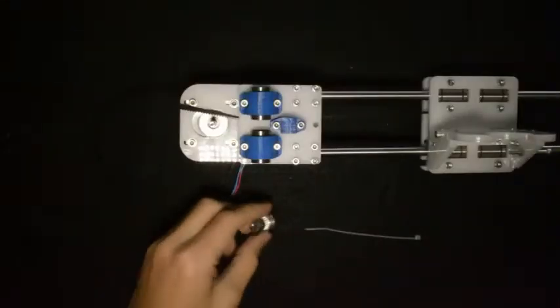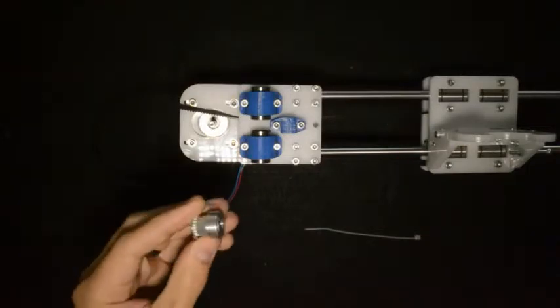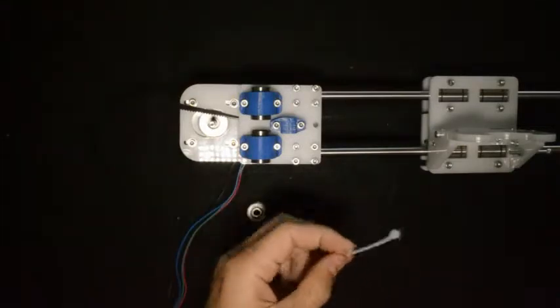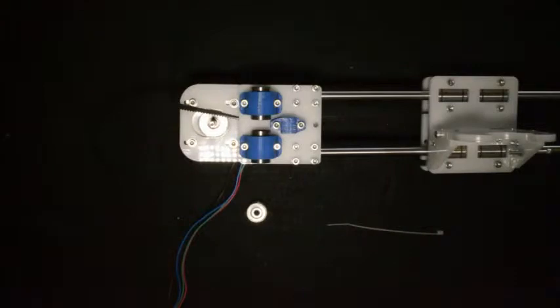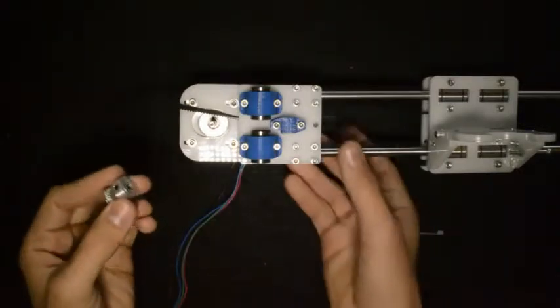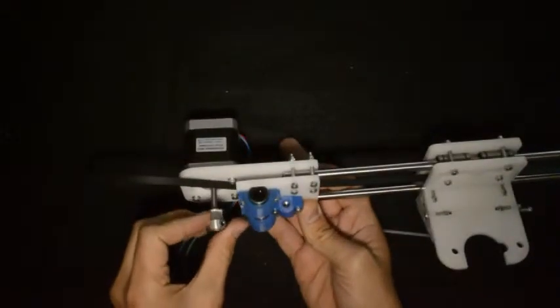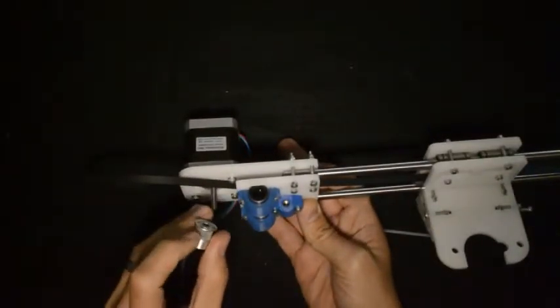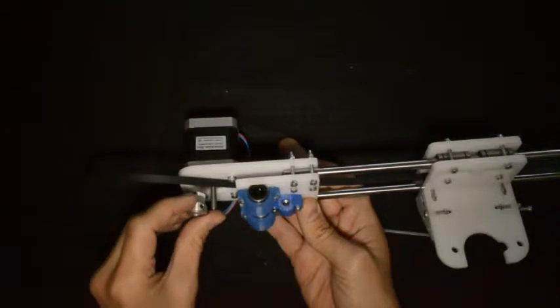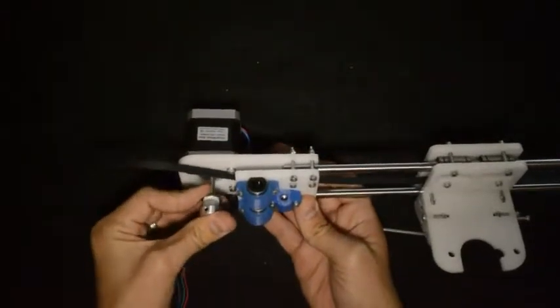For the next step, we will need the GT2 pulley and also a cable tie. What we will do is we will put the GT2 pulley on the stepper motor. Make sure that the grub screws are on the side away from the stepper motor.